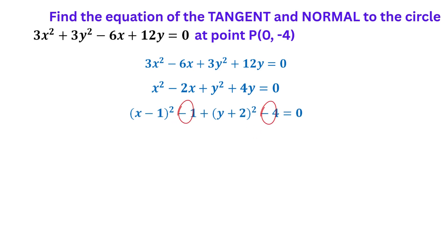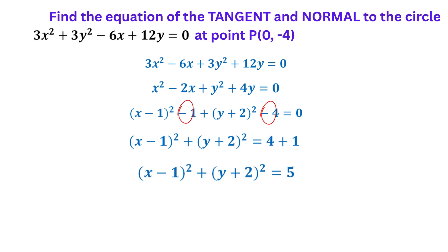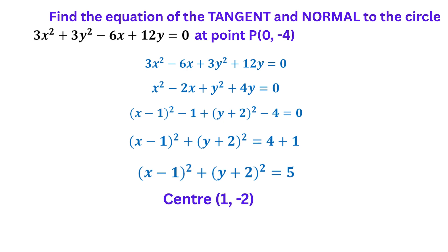Group minus 4 and minus 1 on the right, and we get positive 5. That means the radius will be the square root of 5, since R squared is 5. However, what we really need is the centre, so just change the signs of the numbers in the bracket, and get the centre of the circle to be (1, negative 2).